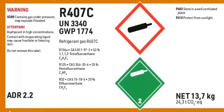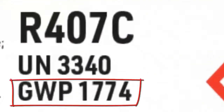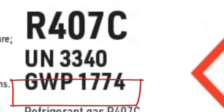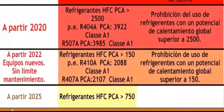Unfortunately, not everything is perfect with R407C. Despite not destroying the ozone layer, and although years ago it was a perfect alternative, its high GWP — global warming potential value — is now a concern. With the new environmental requirements, R407C also presents restrictions under current ecological regulations.